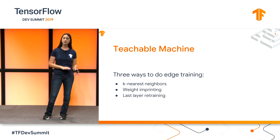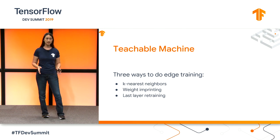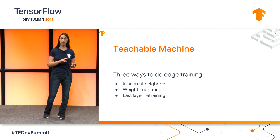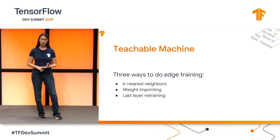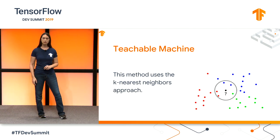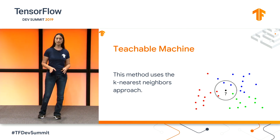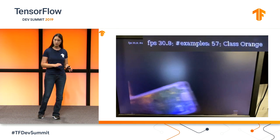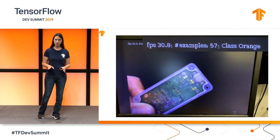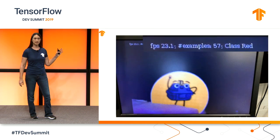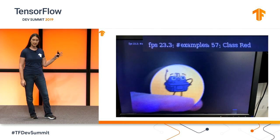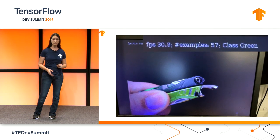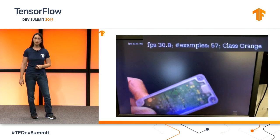This teachable machine demo shows off a form of edge training. Traditionally there are three ways to do edge training: K-nearest neighbors, weight imprinting, and last layer retraining. For this demo, we're using the K-nearest neighbors approach. The TPU enables very high classification rates — you can see the frame rate at which the TPU is classifying images is about 30 frames per second, which is essentially real-time classification.